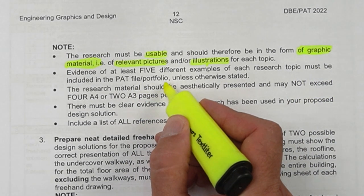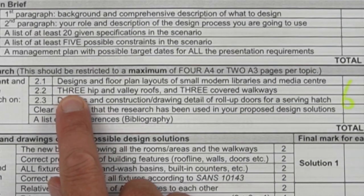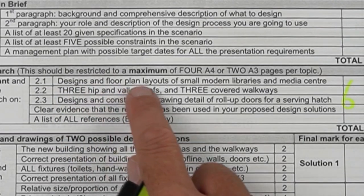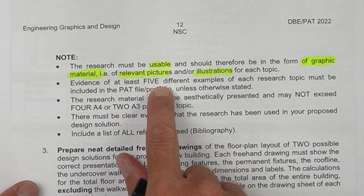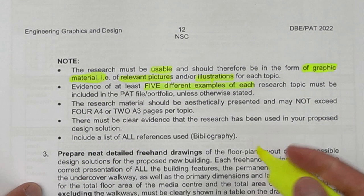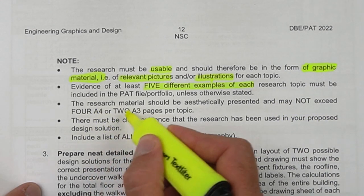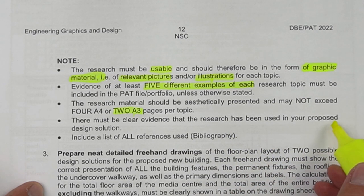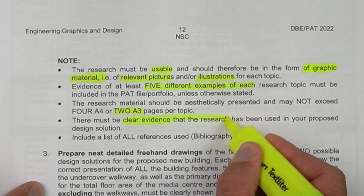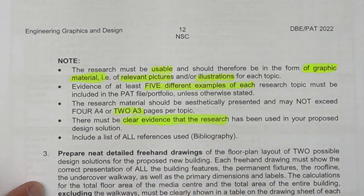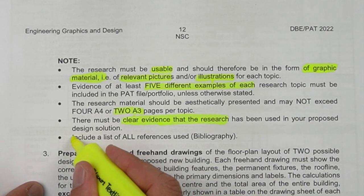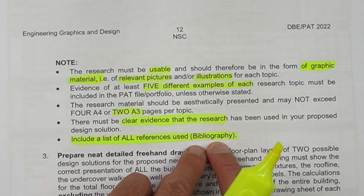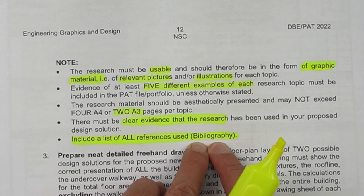The second key requirement is evidence of at least five different examples of each research topic, unless otherwise stated. Where they ask for three examples specifically, five is not required — but for section 2.1, which doesn't specify a number, you need five different examples. The research materials should be aesthetically presented and may not exceed four A4 or two A3 pages per topic. You must also include a bibliography listing all references — you can't just say 'Google'; you must specify the exact website and the date the information was accessed.